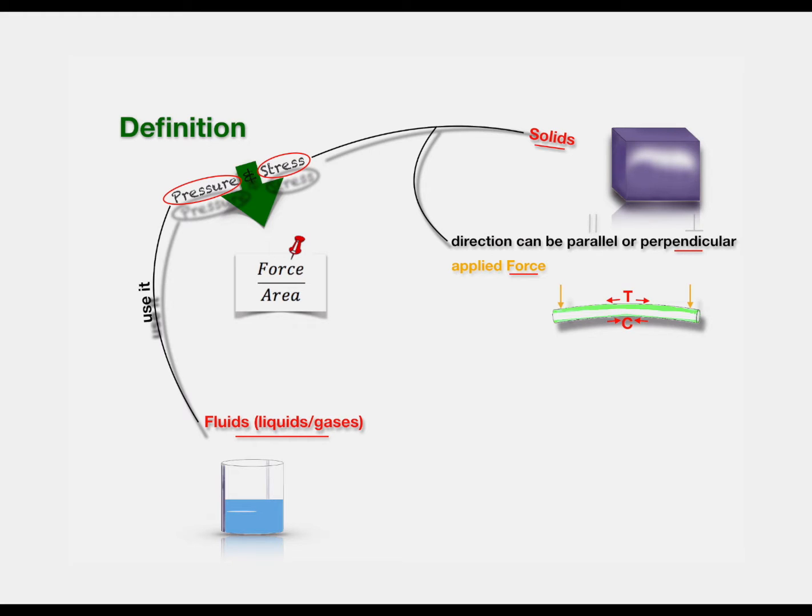Now there is another type of stress, which is produced when the applied forces are parallel to the cross-sectional area. Let's take an example of a solid cube. Here are the forces acting on this cube. As a result, the cube breaks into two pieces. These type of stresses are called shear stresses.